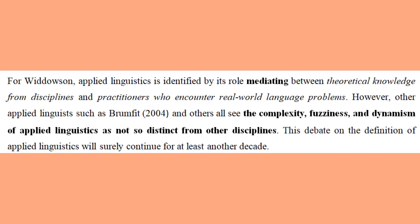However, other applied linguists such as Brumfit and others see the complexity, fuzziness, and dynamism of applied linguistics as not so distinct from other disciplines. This debate on the definition of applied linguistics will surely continue for at least another decade. It means that applied linguistics is like other disciplines — it has complexity, fuzziness, and dynamism.